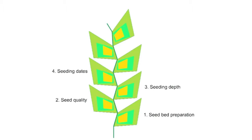1. Seed quality. 2. Seed bed preparation. 3. Seeding dates. 4. Seeding depth. 5. Nutrition. 6. Pest control. And number 7, weather.